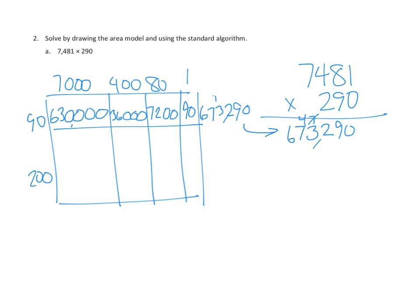Let's see if the next one is any easier. Now doing the 200s row: 200 times 1 is just 200. 200 times 8 tens — 2 times 8 is 16 with 3 tens, giving 16,000. 200 times 400 is 8 with 4 tens, so 80,000. And 200 times 7,000 — 2 times 7 is 14 with 5 zeros, giving 1,400,000.